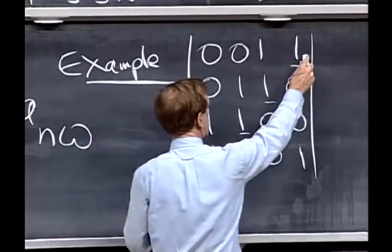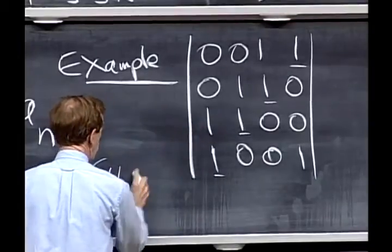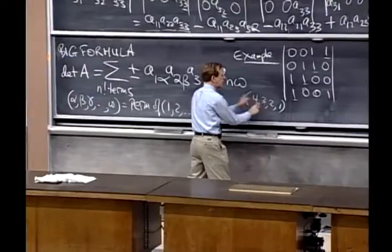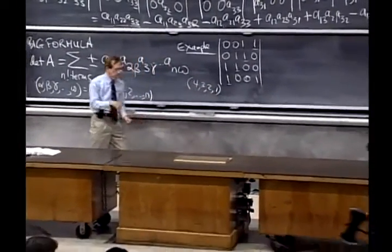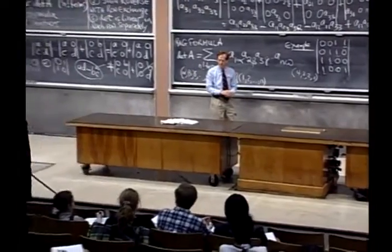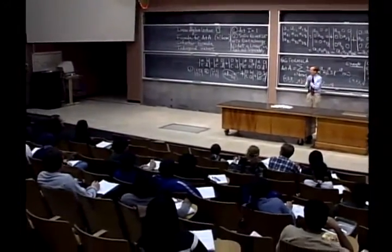because that permutation... I've just written the permutation 4, 3, 2, 1, and one exchange and a second exchange, two exchanges puts it in the correct order.